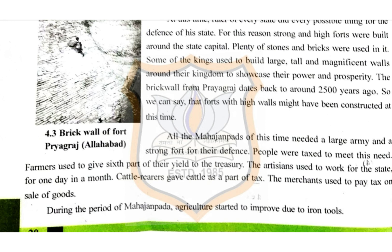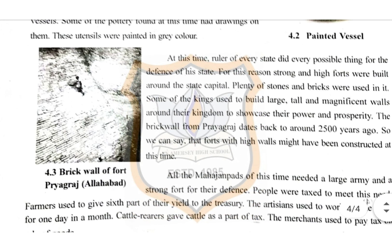The brick wall from Prayagraj dates back to around 2,500 years ago, so we can say that forts with high walls might have been constructed at this time. You can see the picture of the Prayagraj Allahabad brick wall of the fort.